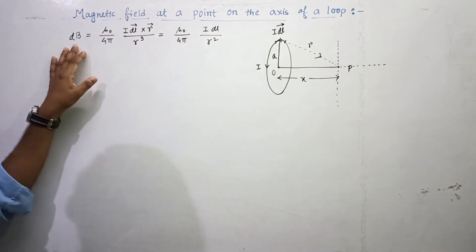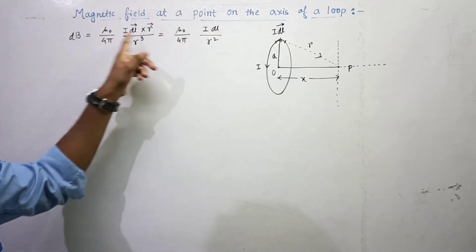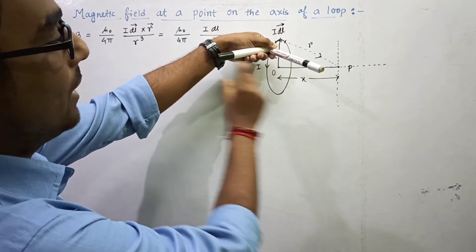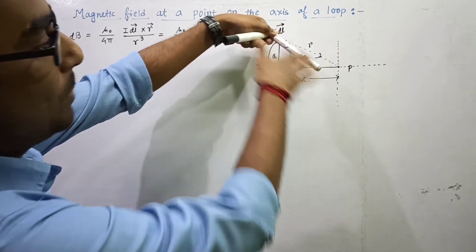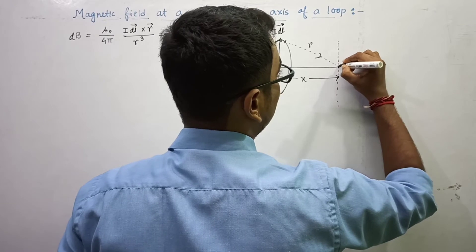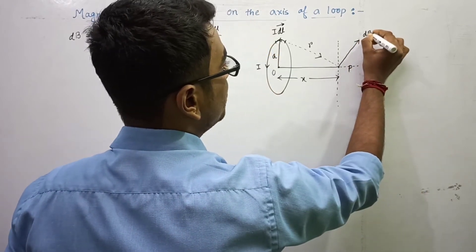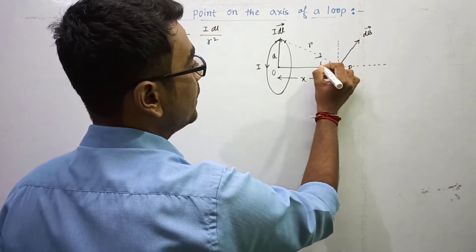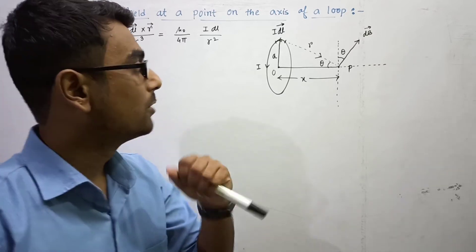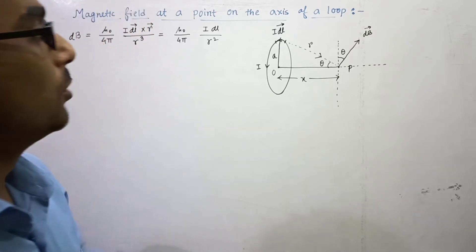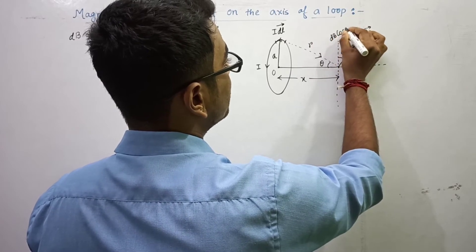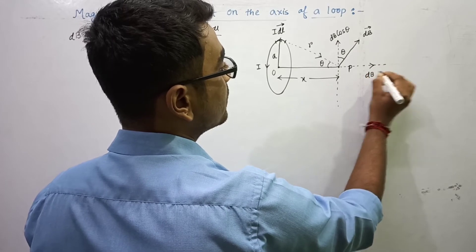Now the direction of the magnetic field dB is in the direction of I·dL × r̂. Since I·dL is tangential and r is toward P, the resulting dB is perpendicular to both, and suppose this makes angle θ with the axis. Using geometry, we can see this angle θ. So dB can be resolved into two components: dB cosθ in the perpendicular direction, and dB sinθ along the axial direction.